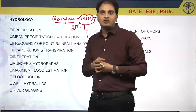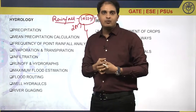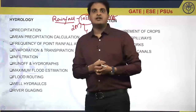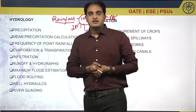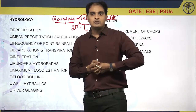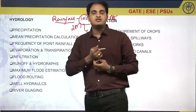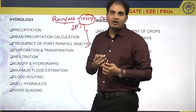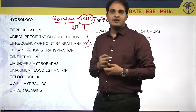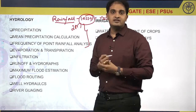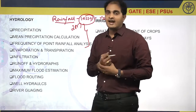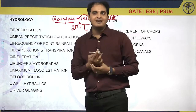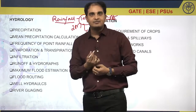We have various types of losses. The first important loss is interception loss. Interception loss means that out of the total rainfall coming from the atmosphere, some portion of rainfall is intercepted by tall objects — buildings, trees, etc. Such a loss is called interception loss.